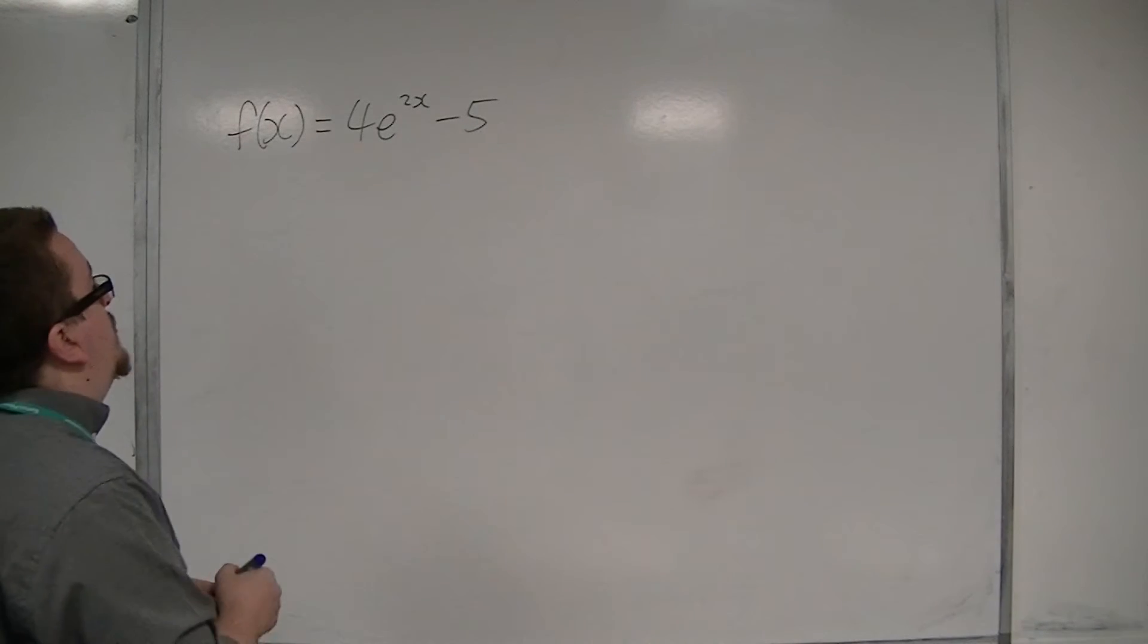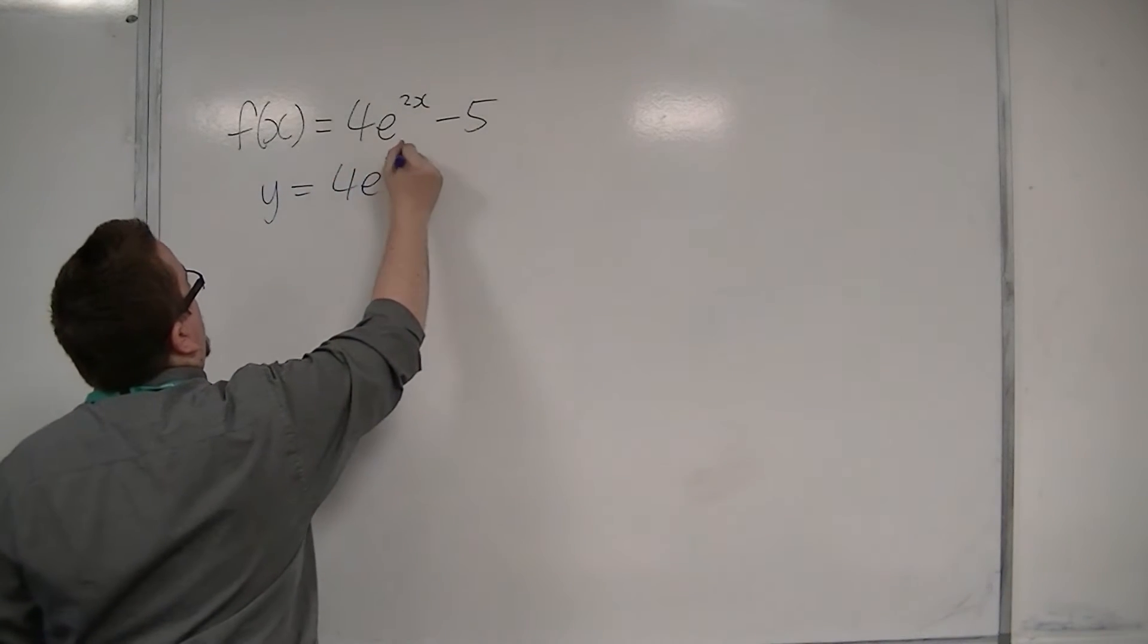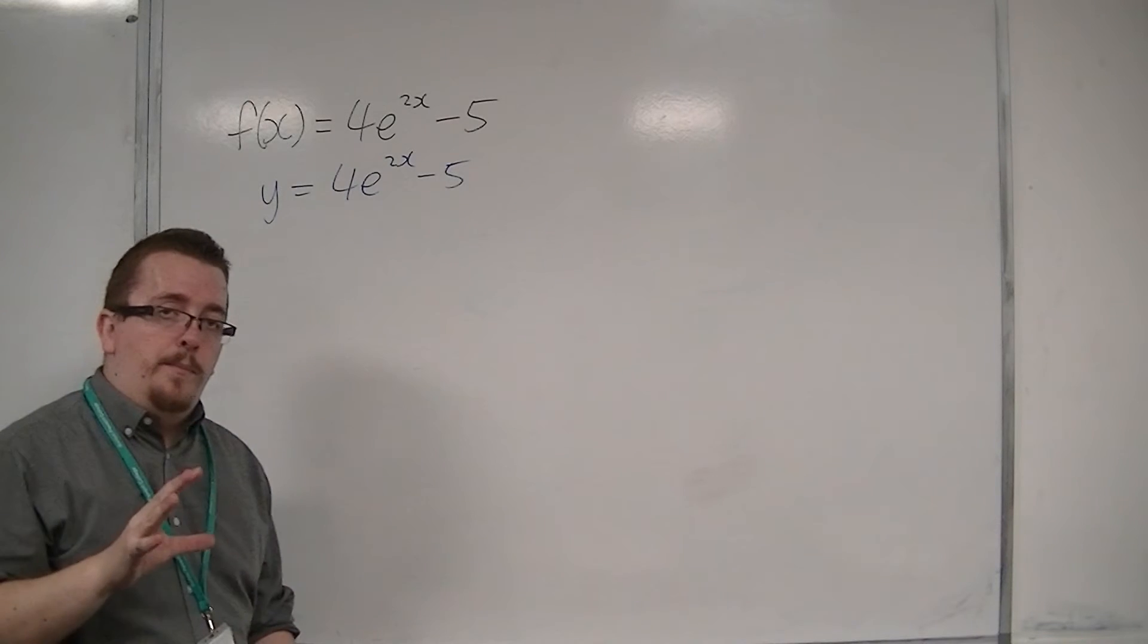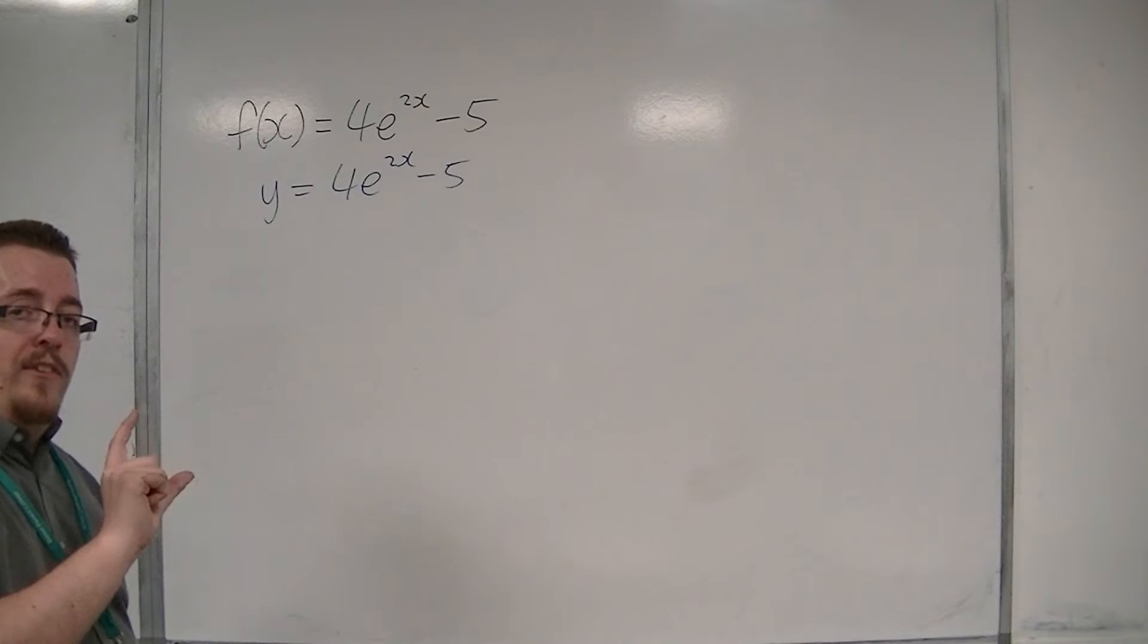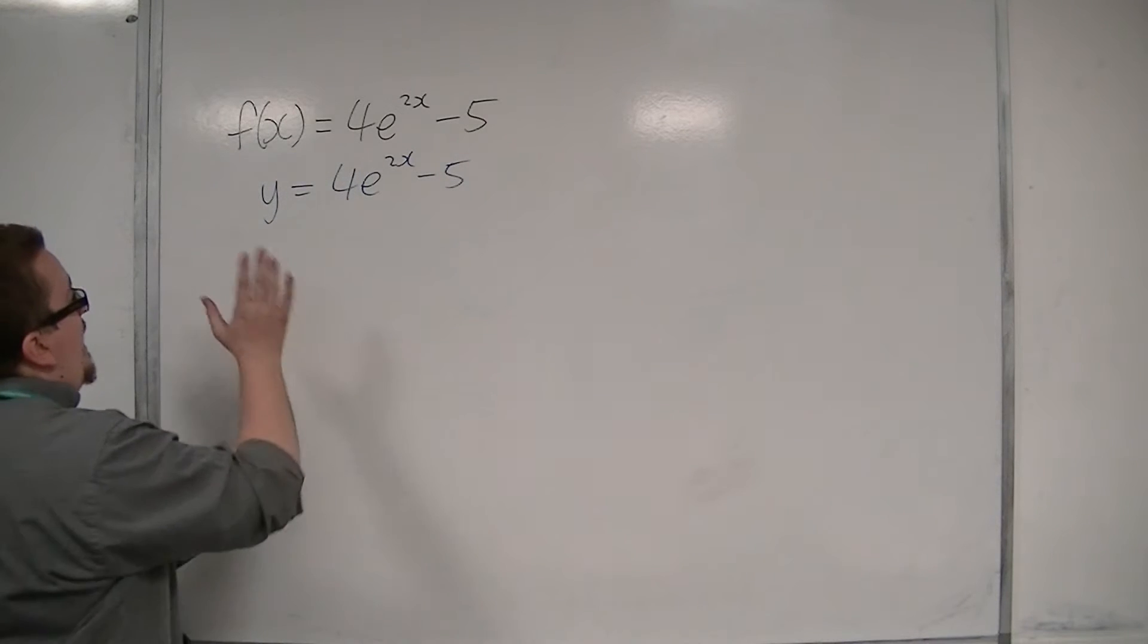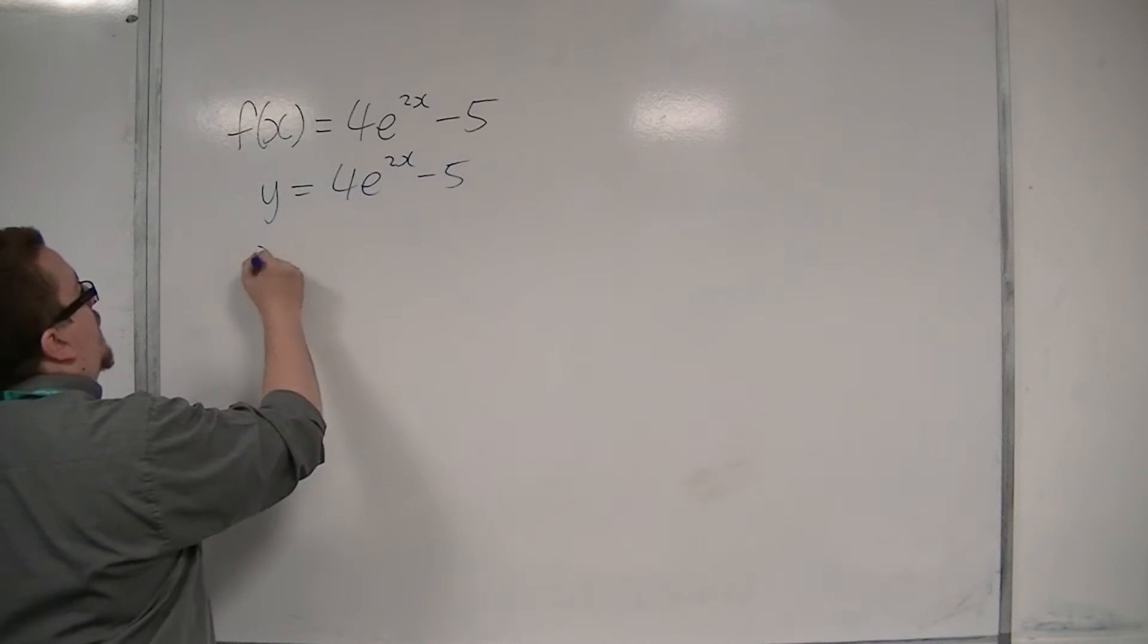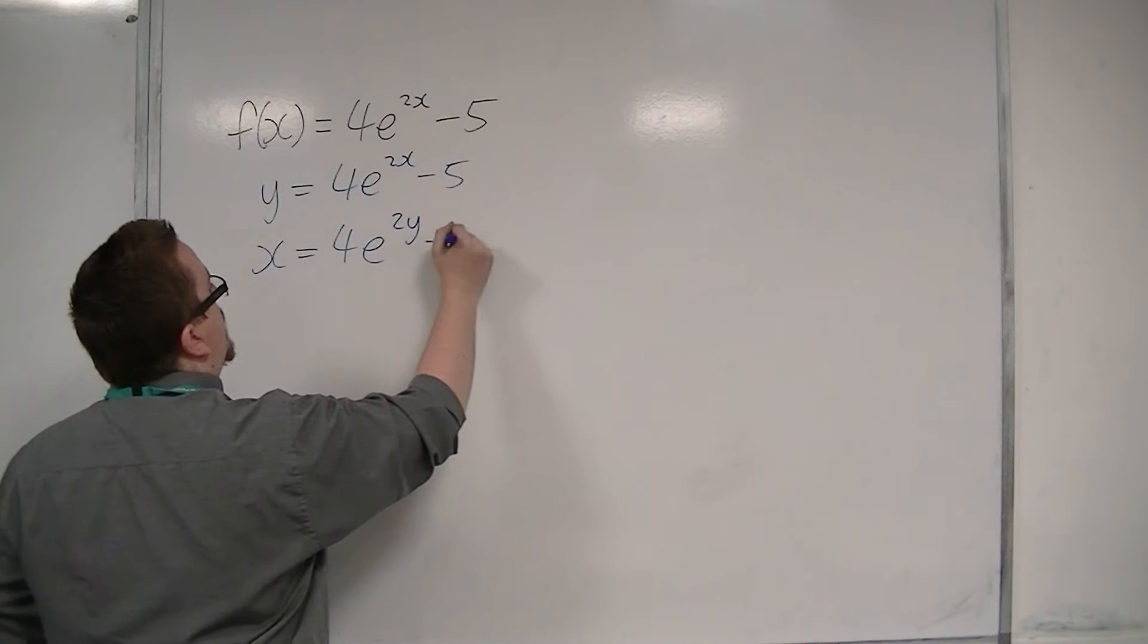The first step is to write this as y is equal to 4e to the 2x minus 5. That is your first step. The second step is to then switch x's and y's. So any x's become y's, any y's become x's. So we're going to have x is equal to 4e to the 2y minus 5.